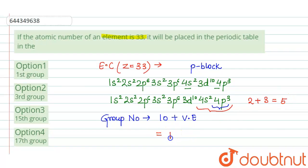So 10 plus 5 equals 15. Since the group number comes out to be 15, it belongs to the 15th group. The correct option is Option 3: 15th group.